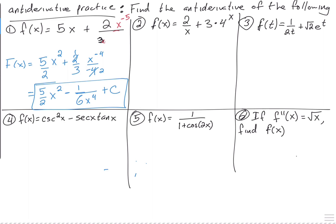So the second one: remember, we cannot do the power rule here. No power rule when the exponent is — if you move it up, it would be x to the minus 1. You cannot do the power rule, because you would get x to the 0 divided by 0, and that doesn't make any sense whatsoever.